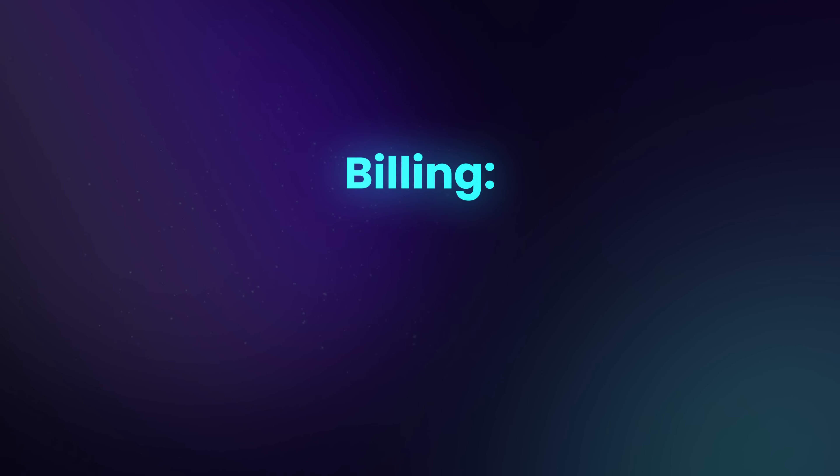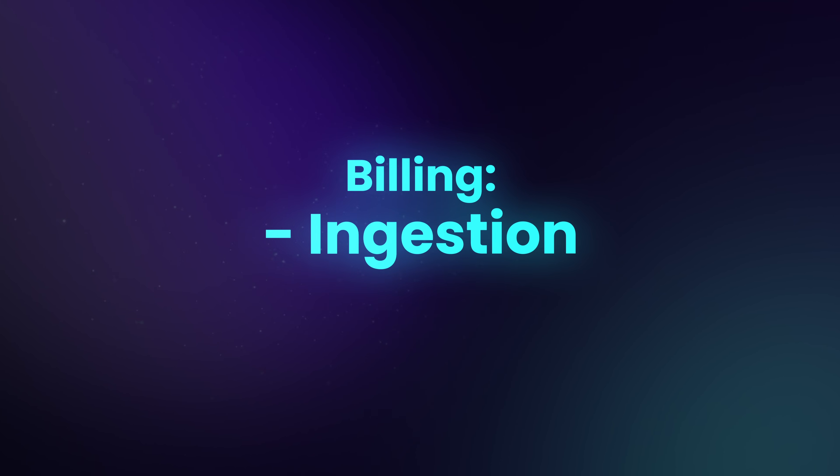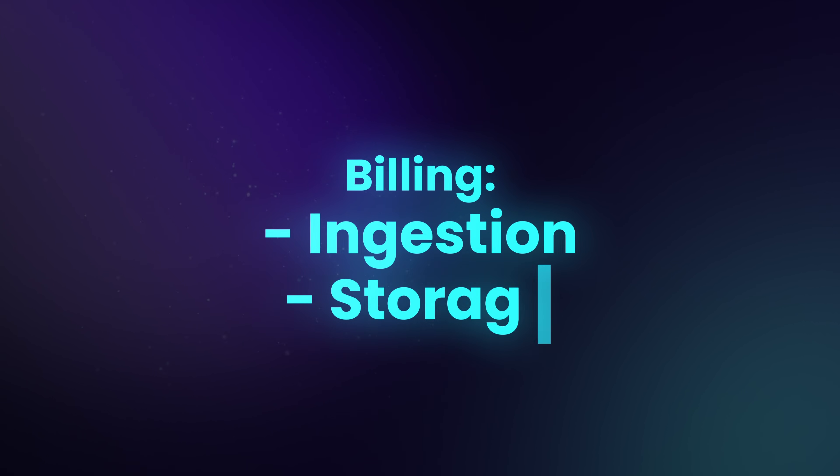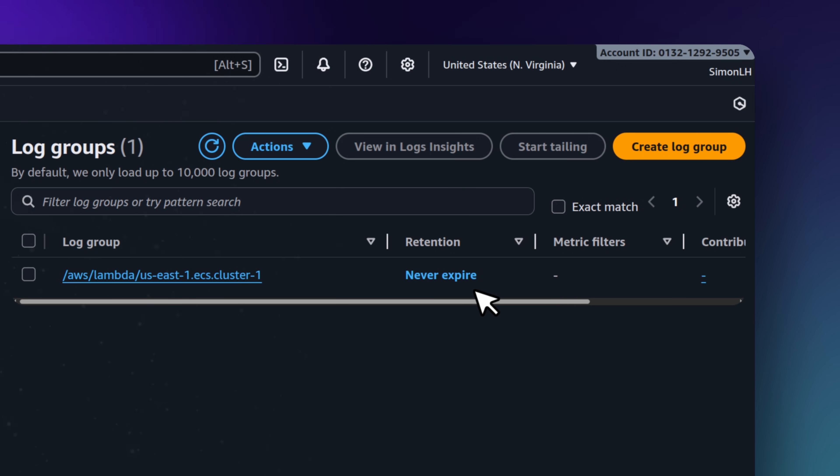The default retention policy for that new log group is always set to never expire. AWS bills you for logs in two ways: you pay to ingest the data, but you also pay a monthly fee for every gigabyte stored. Because the default retention policy is set to never expire, that storage cost accumulates forever. You're literally paying monthly rent for gigabytes of old text logs from Lambda calls that happened years ago. Over time this actually becomes pretty significant.